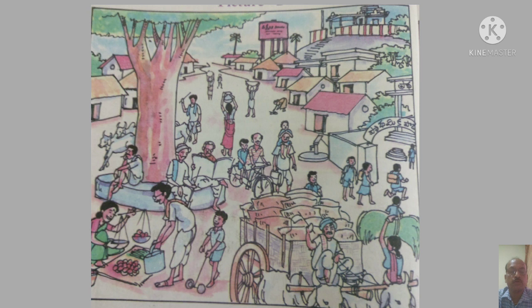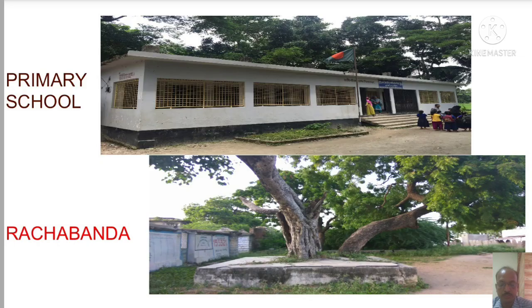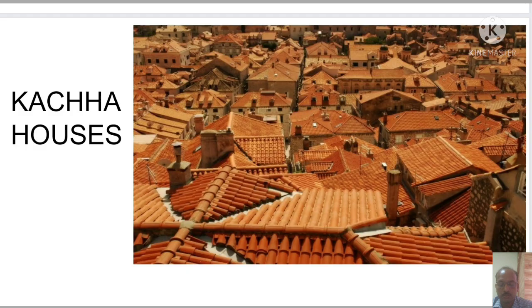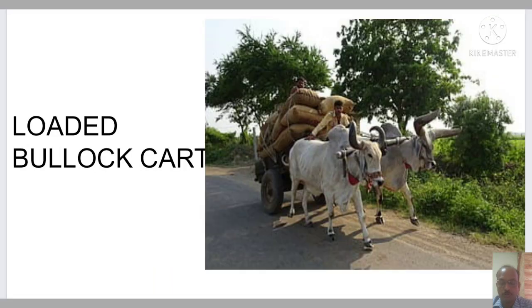Now I will present you some of the places and things. For example: water tank, tall tree, big tree. The places: primary school, rachabanda, kaccha houses, RCC buildings, loaded bullock cart, big cart man.